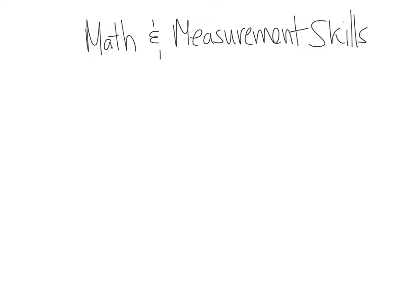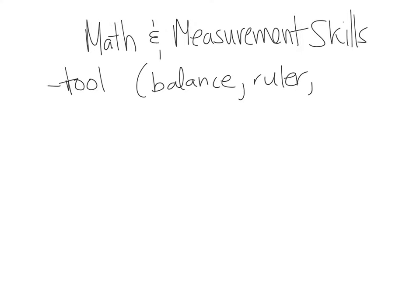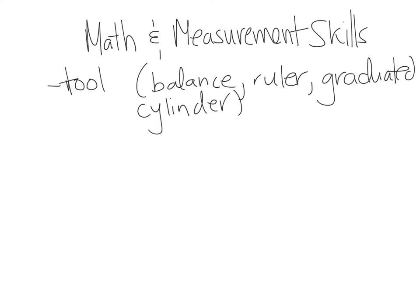A measurement requires a tool — a balance for mass, a ruler for distance or length, a graduated cylinder for volume. All of these allow you to measure something. The numbers you get from a measurement all have a degree of uncertainty. The last number is always an uncertain number, or an estimate.